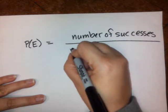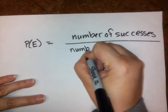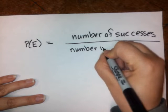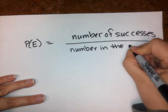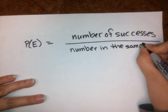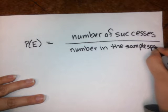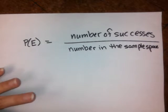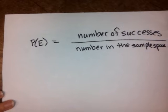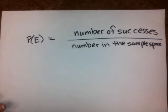And that's over the number in the sample space. Also, fitting things onto a piece of paper - you can see I'm really great at centering. Okay, so that's the formula for probability.